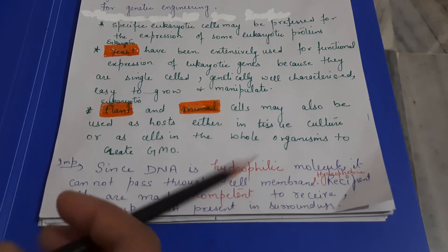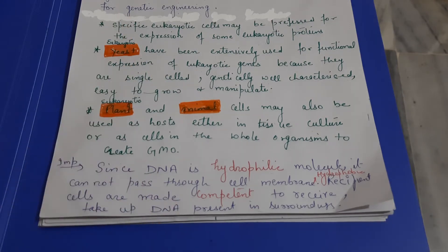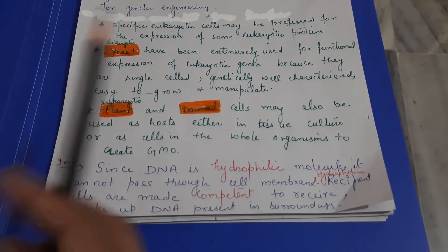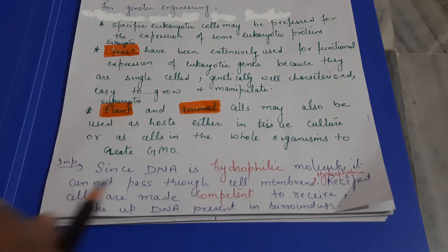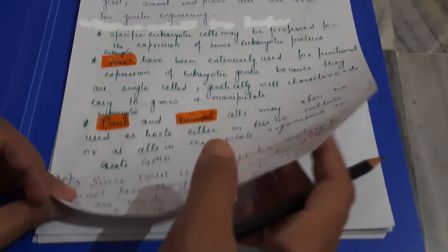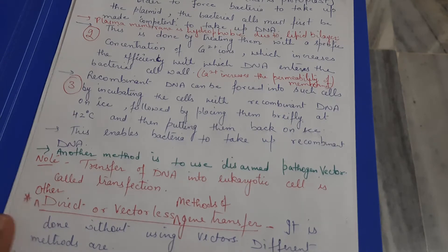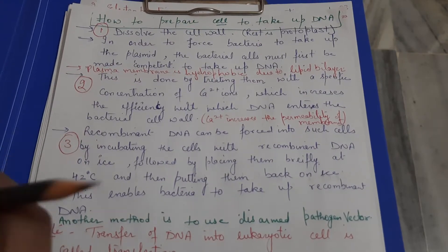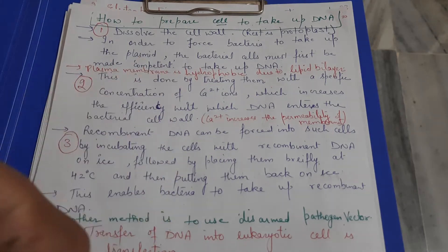To allow DNA to pass through the cell membrane, we need to make the cell competent so that the DNA can enter. Otherwise, it will not happen. We have to make the host cell competent so it can receive the DNA. Now we will see how to make a cell competent so that it can easily take up foreign DNA from the environment.